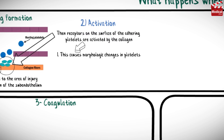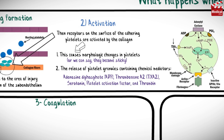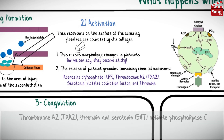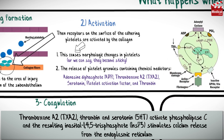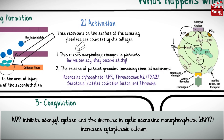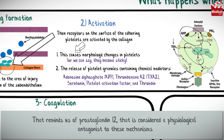Receptors on the surface of the adhering platelets are activated by the collagen. This causes morphologic changes in platelets — they become sticky — and the release of platelet granules containing chemical mediators such as adenosine diphosphate (ADP), thromboxane A2, serotonin, platelet activation factor, and thrombin. Thromboxane A2, thrombin, and serotonin activate phospholipase C, and the resulting inositol 1,4,5-trisphosphate stimulates calcium release from the endoplasmic reticulum. ADP inhibits adenylyl cyclase and the decrease in cAMP increases cytoplasmic calcium. All antiplatelet drugs act one way or another to inhibit these calcium-dependent pathways of platelet activation.